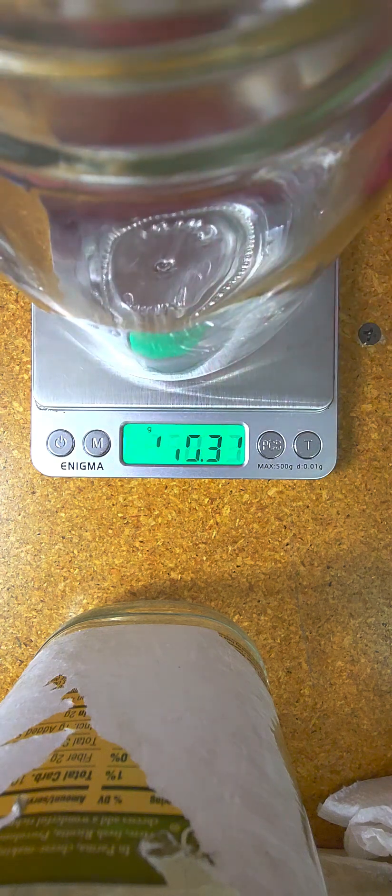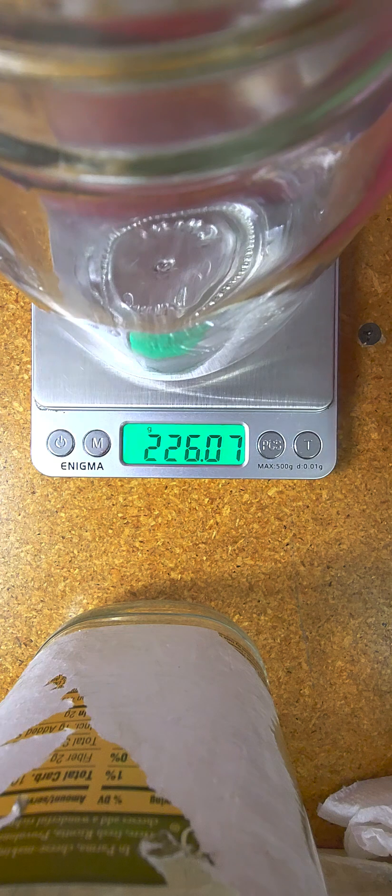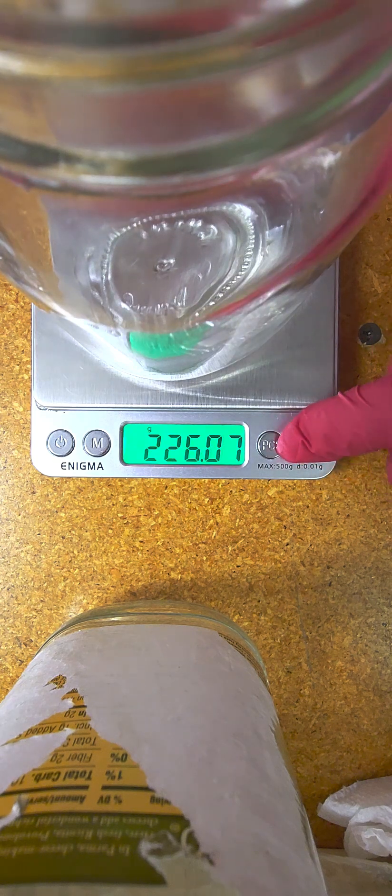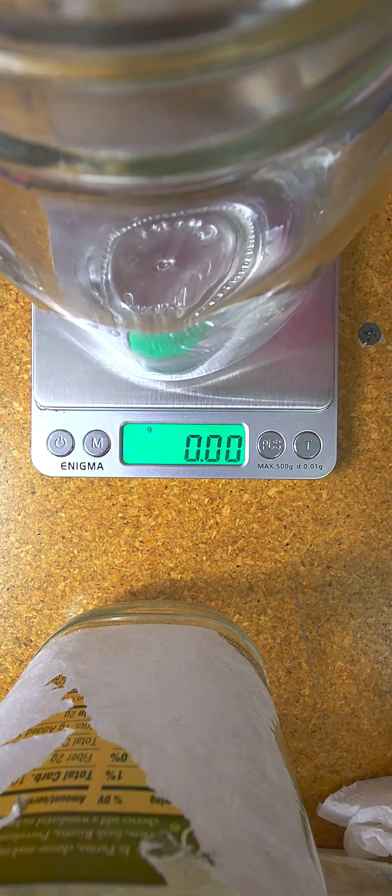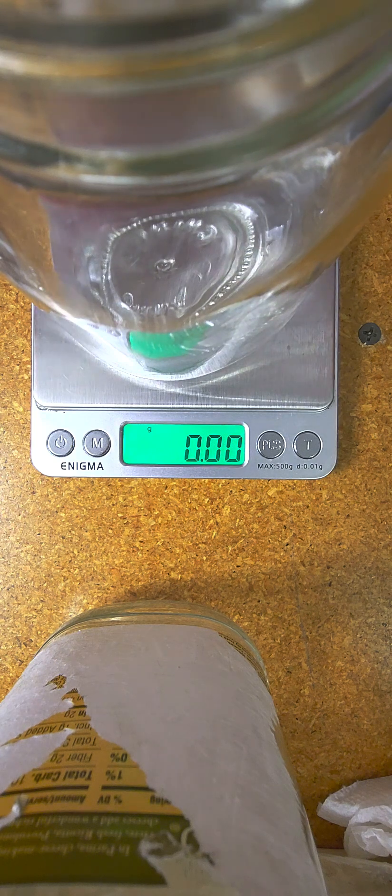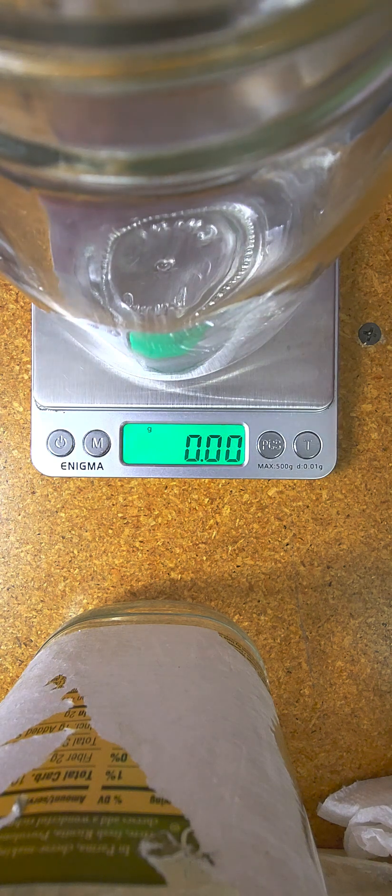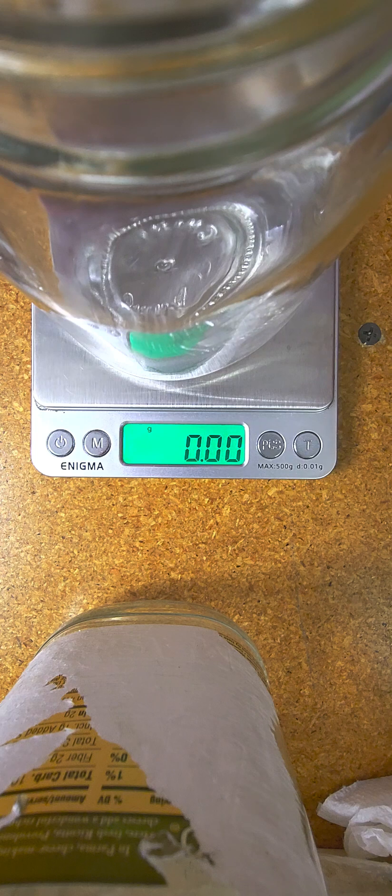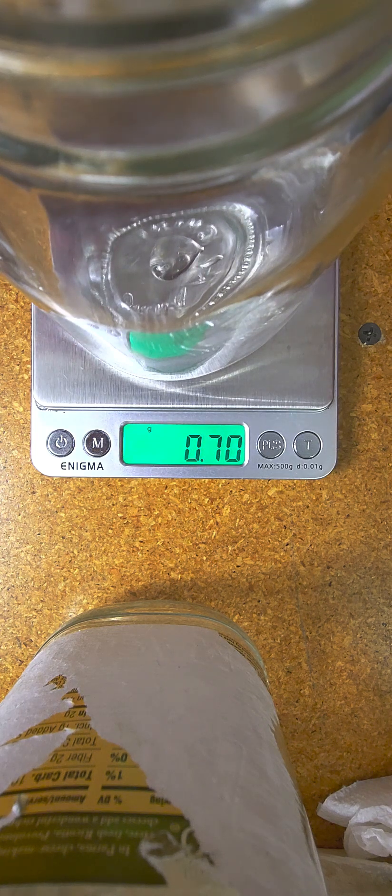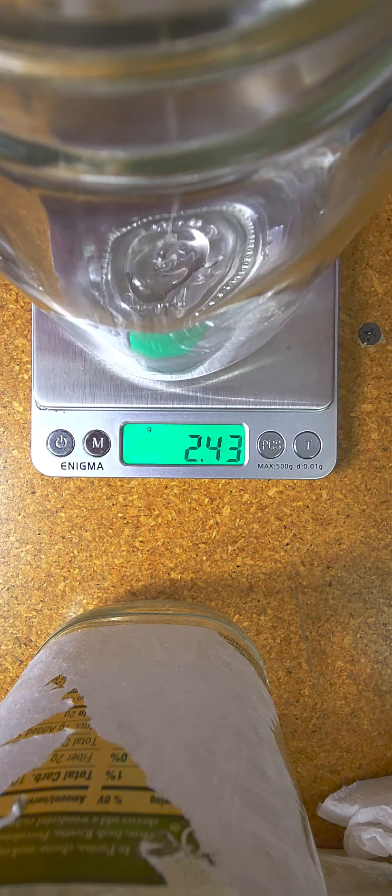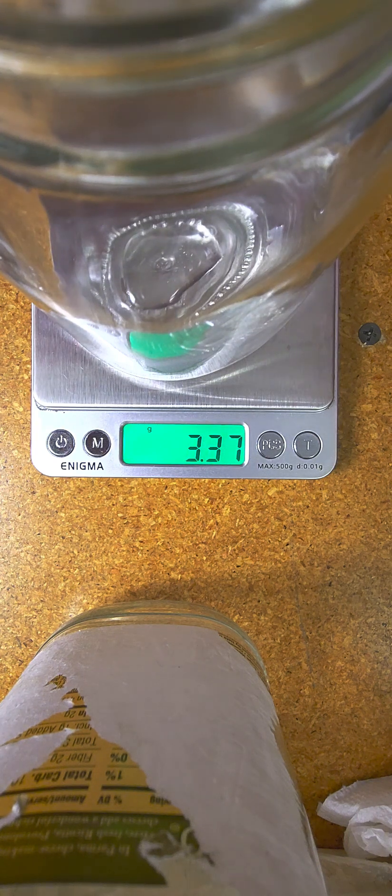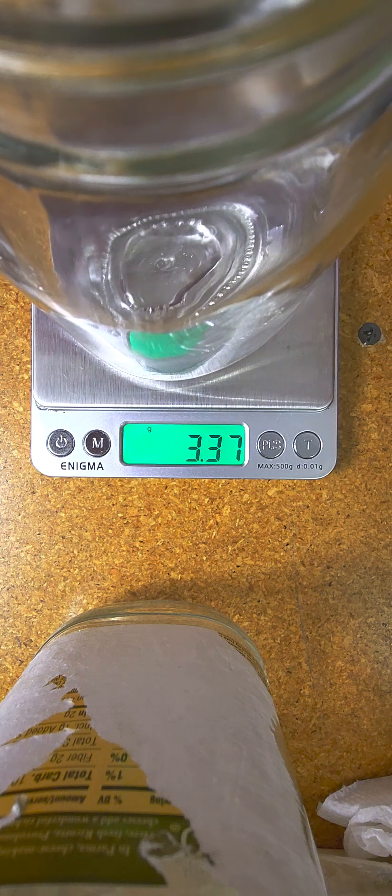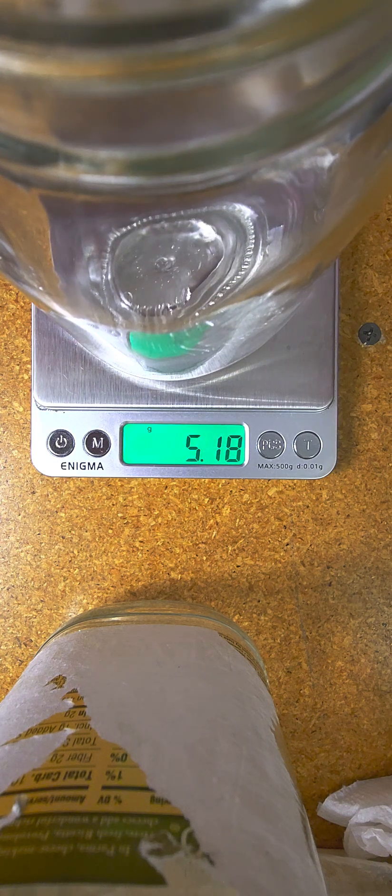We're going to put our jar on the scale and we're going to tare that. We are going to start out with Karo and we are doing a pint jar. If you're going to do a quart jar just double the measurements and the water. We are going to put six grams in our pint jars. Six grams of Karo, that seems to be the sweet spot.